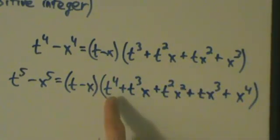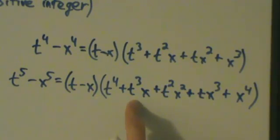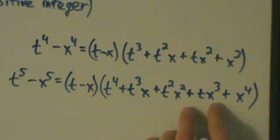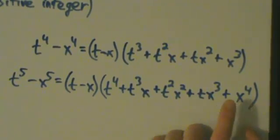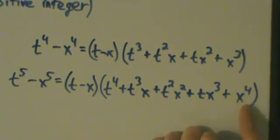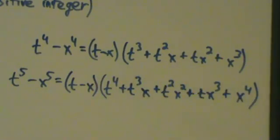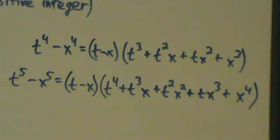So this is like t to the fourth times x to the zero, then t to the third times x to the first, then t to the second times x to the second — the power of t decreases while the power of x increases, all the way until t to the zero times x to the fourth. The same kind of pattern happened in the n equals 4 case as well.